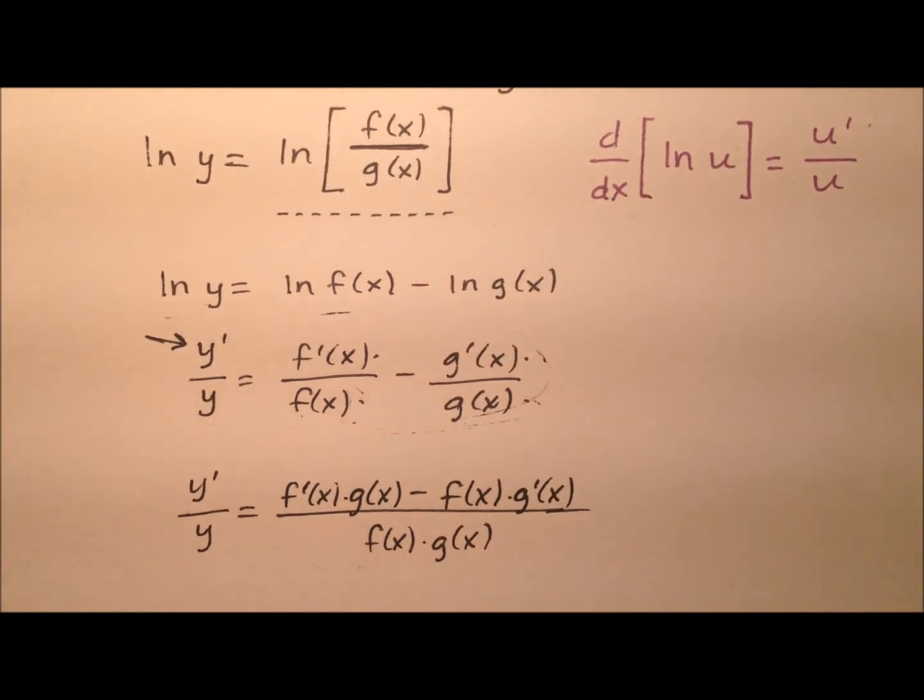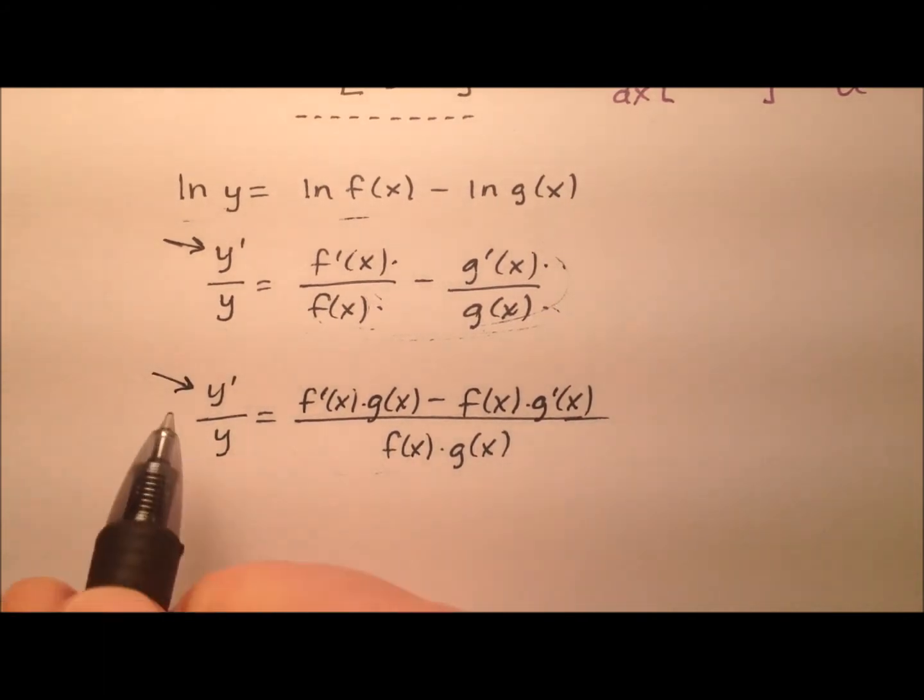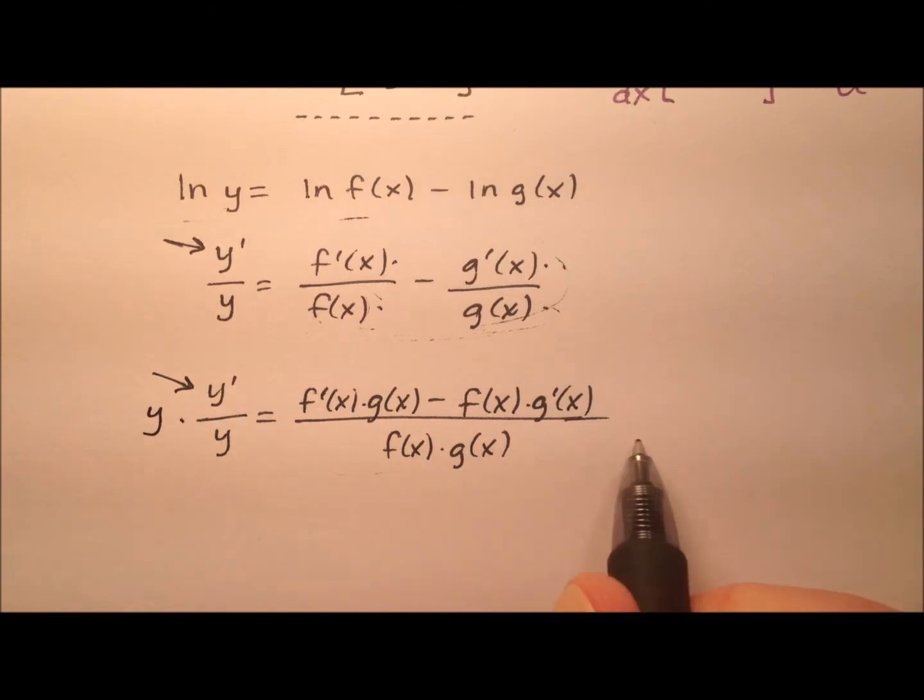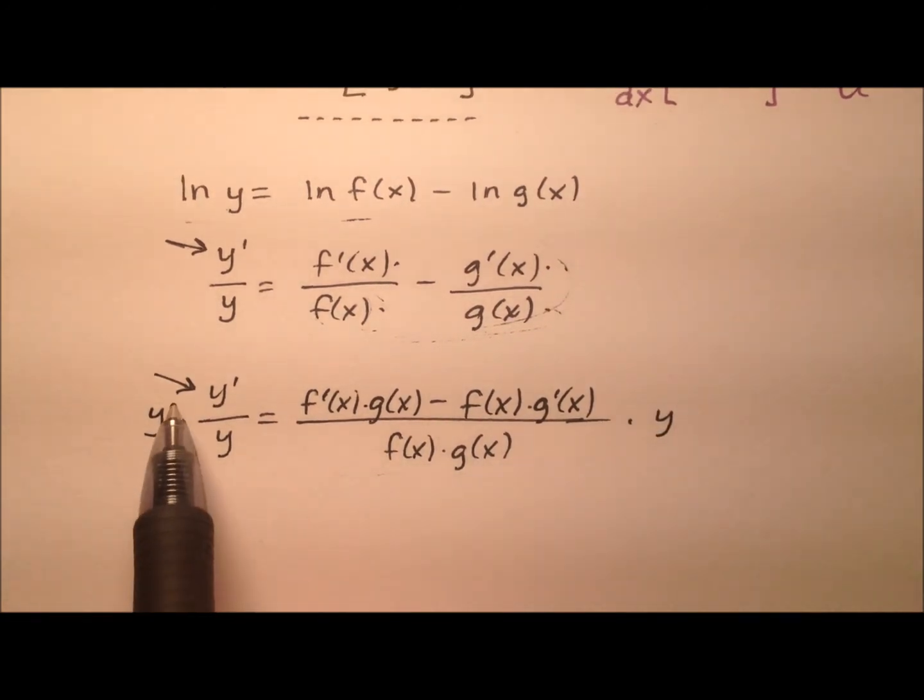and the same thing here. So we'll have f of x times g prime of x. And all of that, of course, is over that common denominator. So if we're trying to solve for this y prime, it looks like I need to go ahead and multiply both sides of the equation by y. And in this case, on the left side,